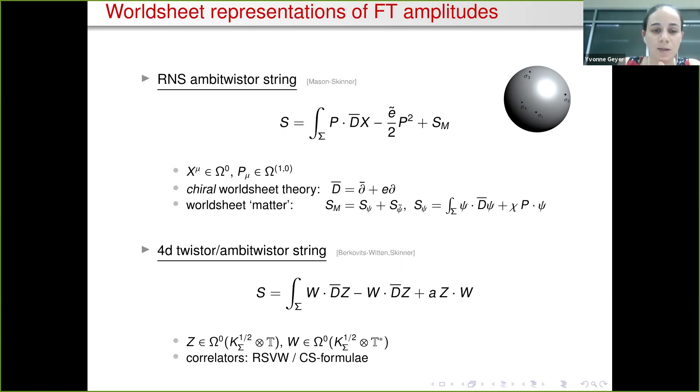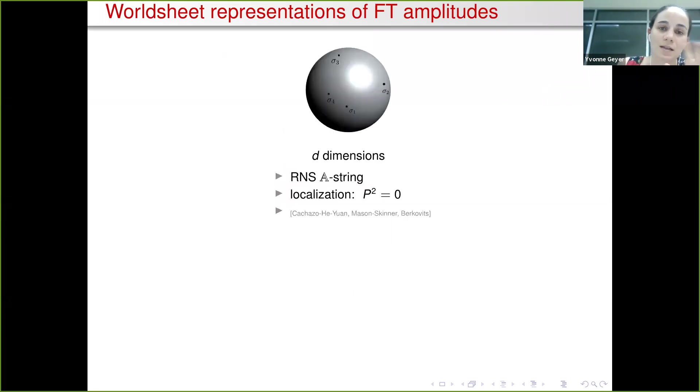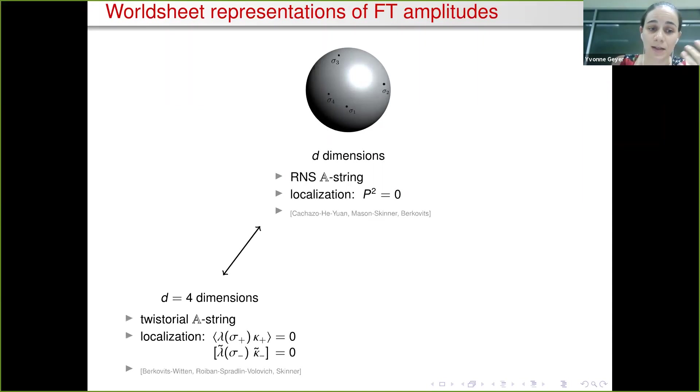The two have obviously talked to each other - they know about each other. In particular, if you calculate formulas in the RNS ambitwister string you get the so-called CHY formulas that gives you one of the amplitude representations I was referring to. On the other hand, if you calculate N equals four in the twistorial ambitwister string you end up with the RSVW or the CS for gravity formulas. These two you can check agree in four dimensions.